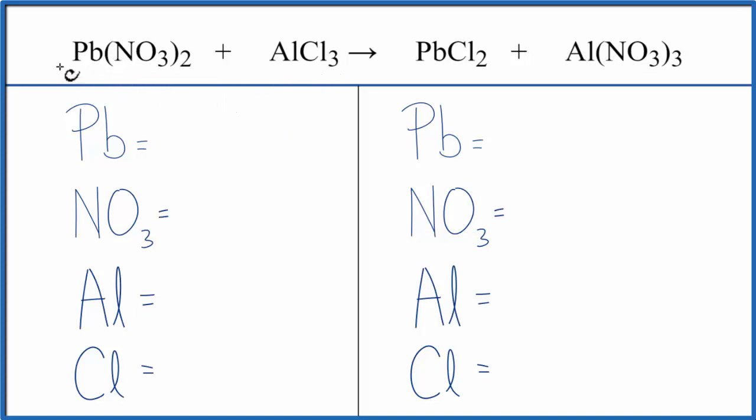Let's count the atoms up. Lead, 1, and then NO3, that's a polyatomic ion, it's called a nitrate ion, and it stays together in the reaction. We have a nitrate ion here, and then it stays together. It's over here. Because of that, I'm going to count this as 1 item. So I have 1 nitrate times 2, that gives me 2 nitrates, I have 1 aluminum, and 3 chlorines.